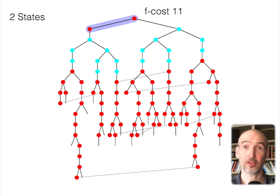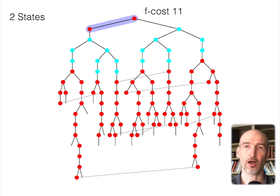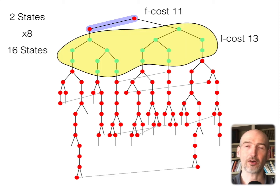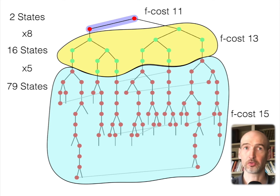IDA* has been a successful algorithm in practice because of a few things. When we look at how many nodes there are for a given F cost, we count how many states there are in the state space with that particular F cost. For F cost 11 we have two states. When we have F cost 13, that grows to 16 states — growing by a factor of 8. And when we go to F cost 15, we get to 79 states in the tree, growing by a factor of 5. As long as that grows by a constant factor, we see exponential growth in the tree.